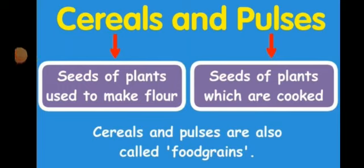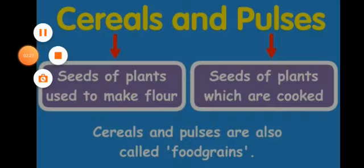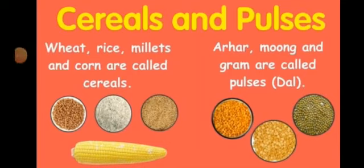Cereals means seeds from which we can make flour — the grain we call 'anaj'. For example, wheat, bajra, and maize are cereals. Pulses means seeds of plants which are cooked — for example, dal and moong dal. These are the pulses. Wheat, rice, millet, and corn are called cereals. Tur, moong, and gram are called pulses.